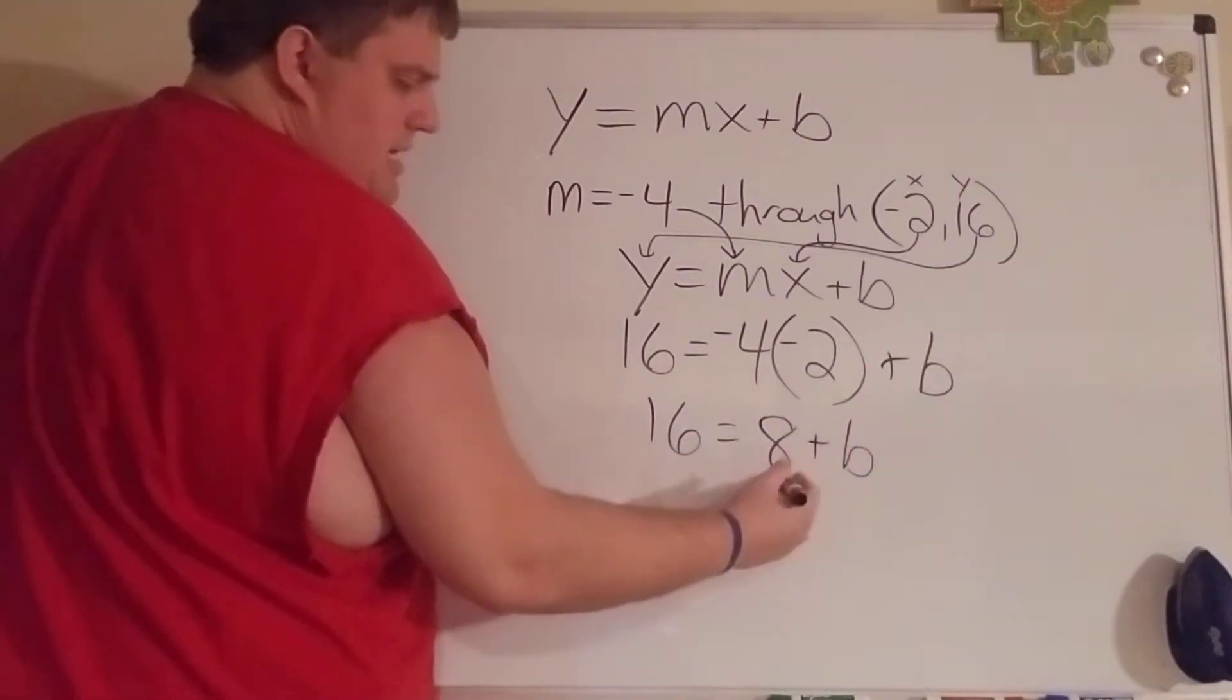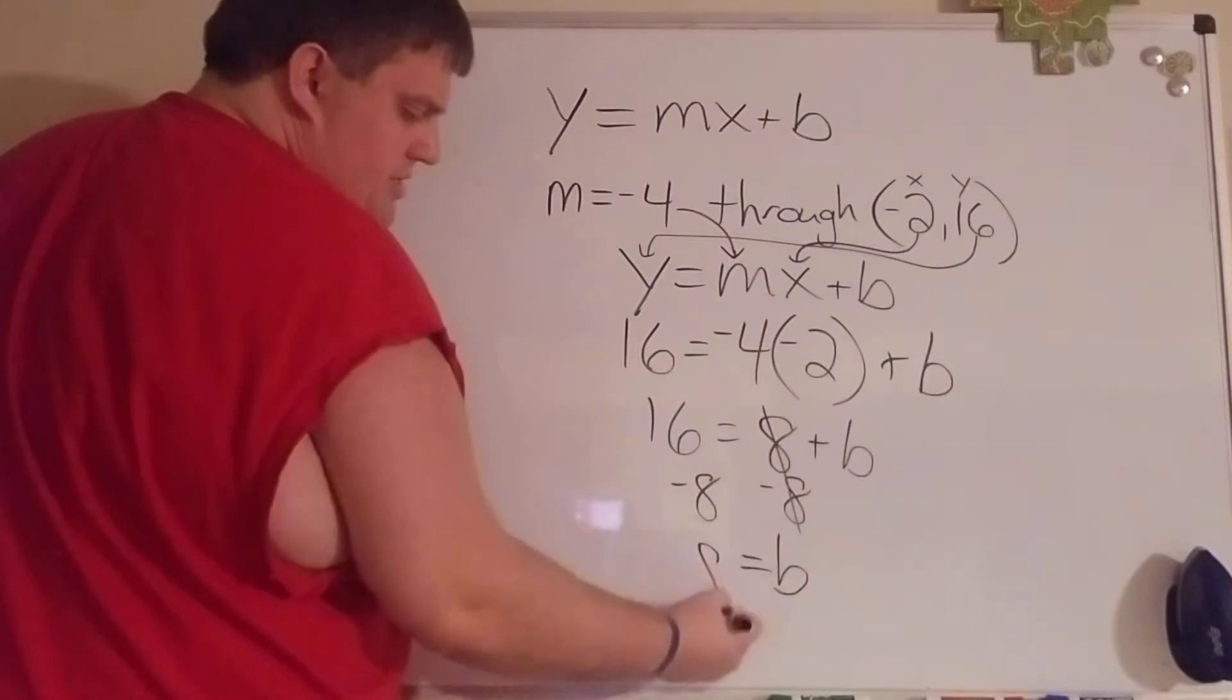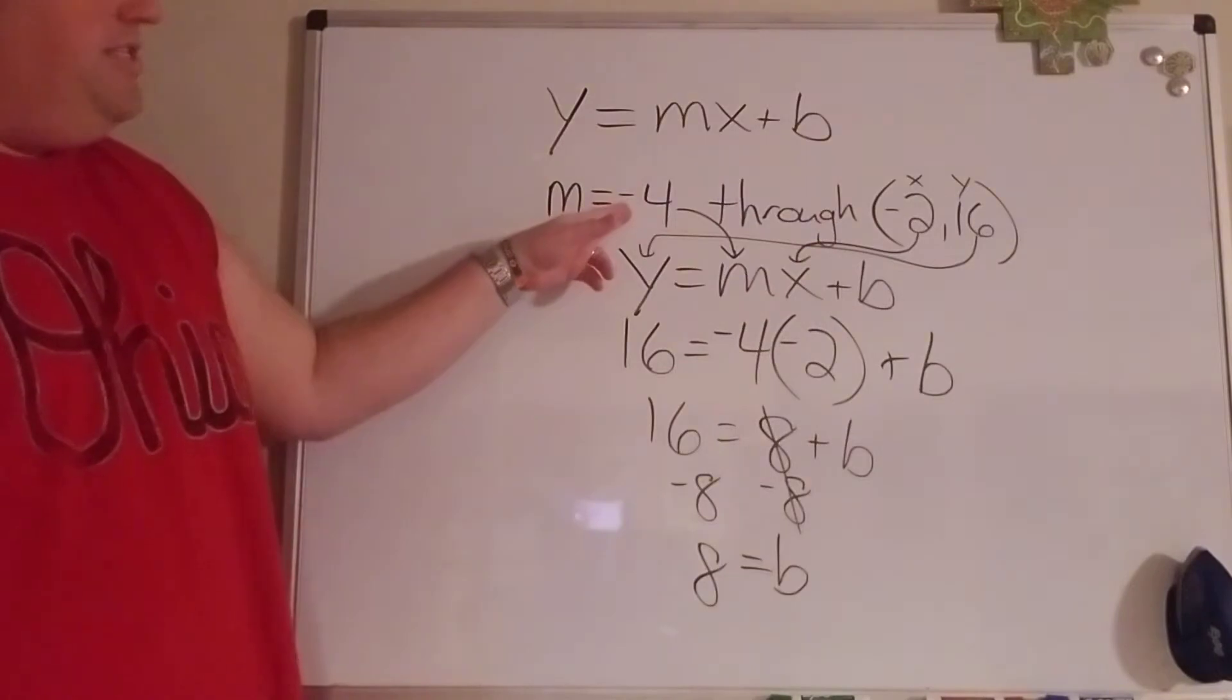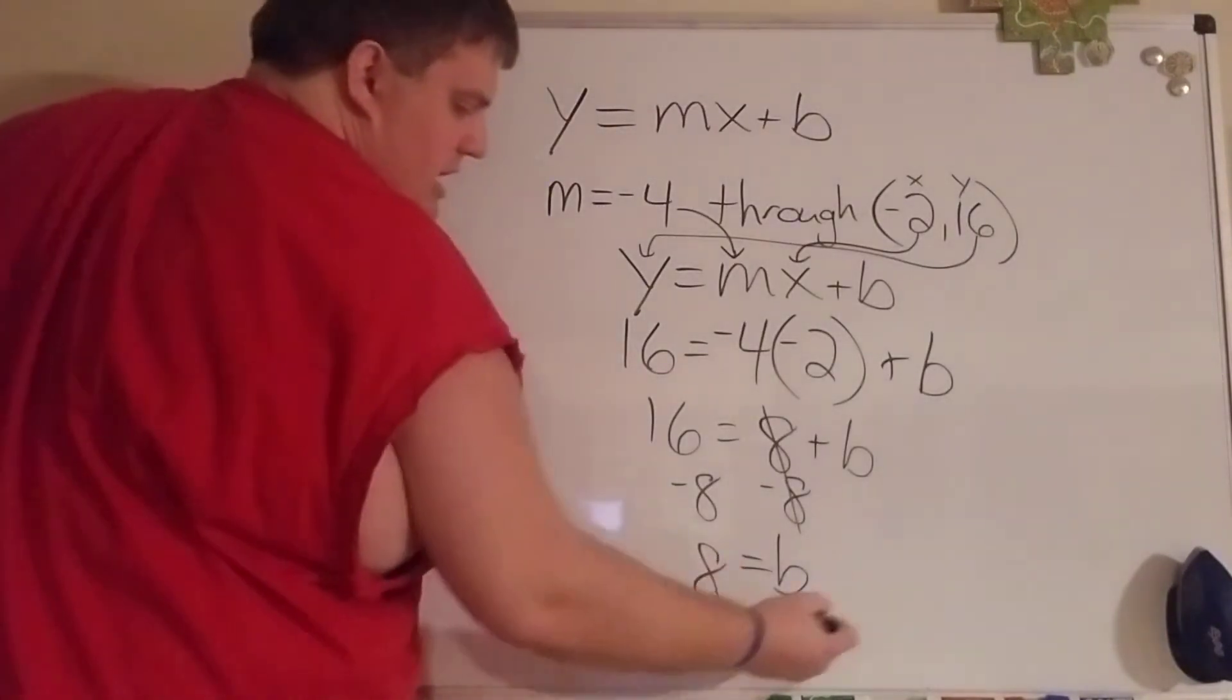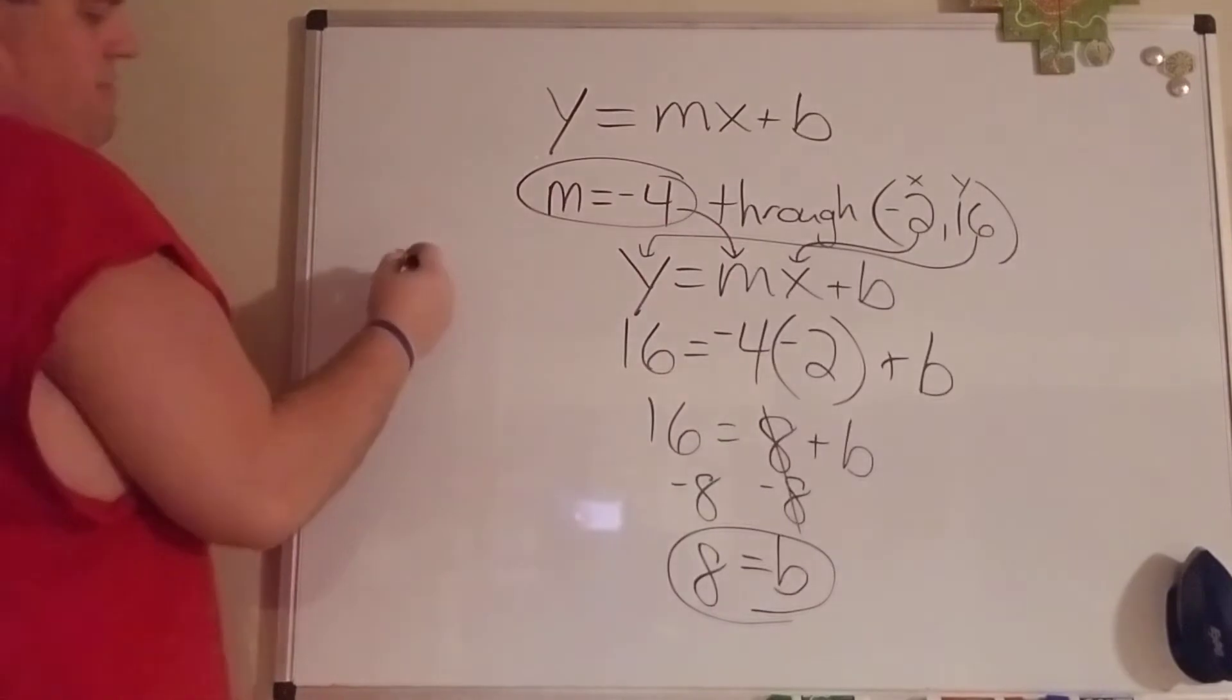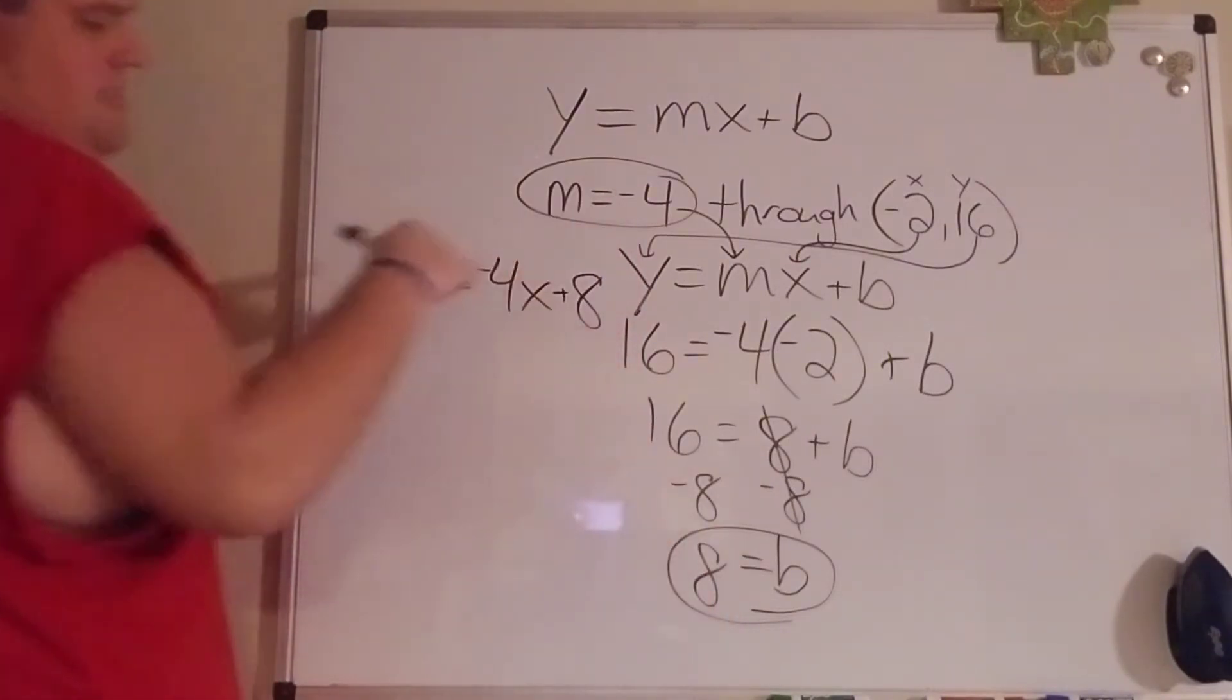Negative four times negative two is going to be positive eight. If I want to get b by itself, I'm going to subtract eight from both sides and that gives me b equals positive eight. So using the point and my slope, I solved and found out my y-intercept was eight.